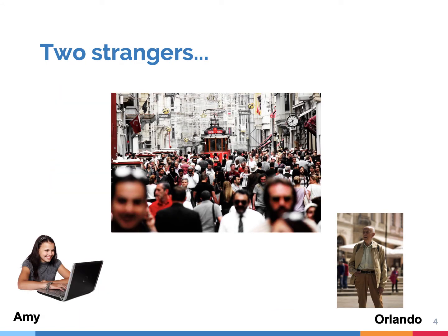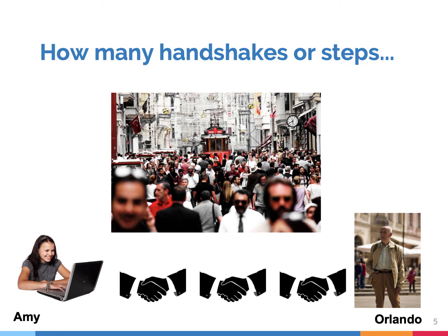One way to approach this question is to think about the following situation. Suppose we randomly take two persons from a large-scale society, let's say Amy and Orlando. They don't know each other, of course — they're complete strangers. The key question is, are Amy and Orlando somehow connected? And if so, how many handshakes or steps are needed to connect the two?